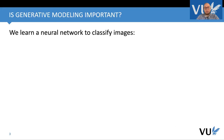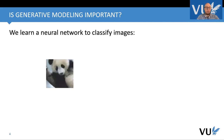The first question is whether generative modeling is even important or useful for us. To understand that, let us discuss a very simple problem. We learn a neural network to classify images. As you've heard, this is doable with deep learning and gives us very good results. Let's say we have a panda bear and a very well-trained neural network, and the softmax activation gives us almost certainty that this is a panda bear.